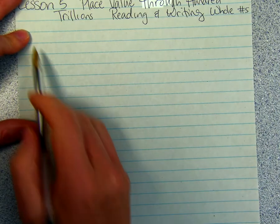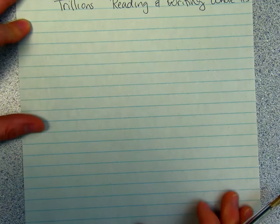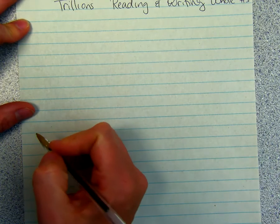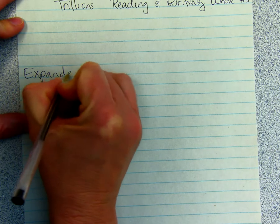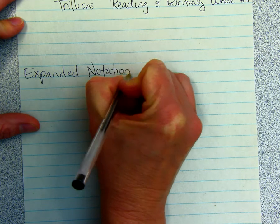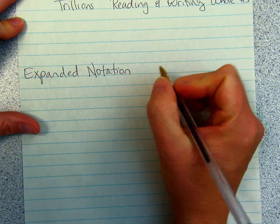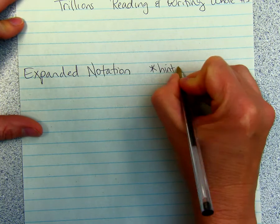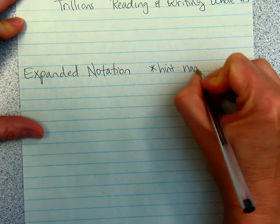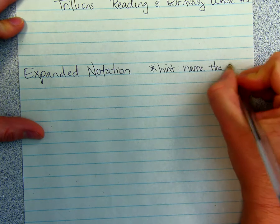Leave some space to be able to glue that in. And we're going to go over Expanded Notation. For a hint on this, you want to name the place values.